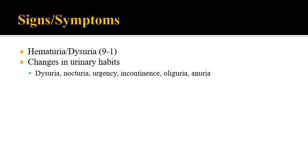There are all different types of changes in urinary habits. Dysuria is difficult urination; nocturia is waking from sleep to urinate; unusual urgency is a sudden need to go; incontinence is the inability to control excretion; oliguria is very infrequent urination; and anuria is the absence of urination. These are all indicative of various disorders — related to the renal system, the urinary tract, or possibly a metabolic disorder.